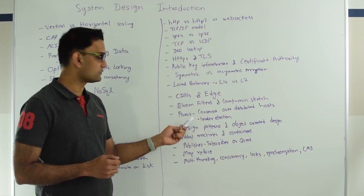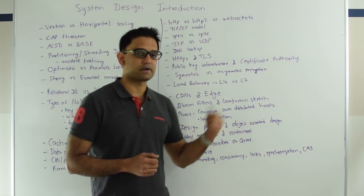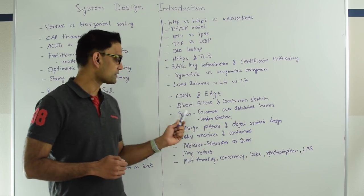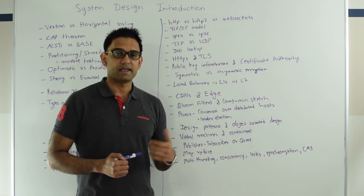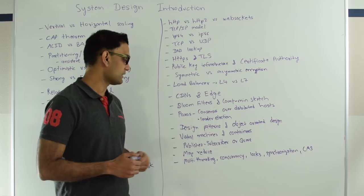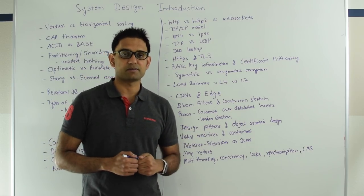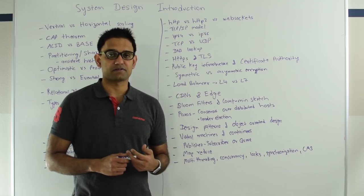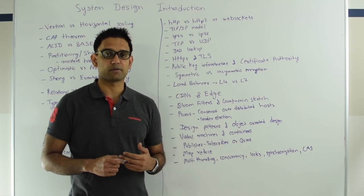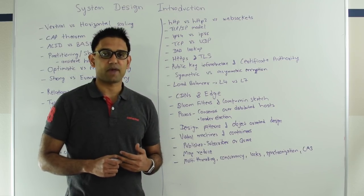Then we have Paxos which is used to derive consensus over distributed hosts. Before Paxos came along, finding consensus was a very hard problem. An example of consensus is doing a leader election among distributed hosts. I do not expect you to know how Paxos works internally but it's good to know what are some of the use cases which Paxos solves.